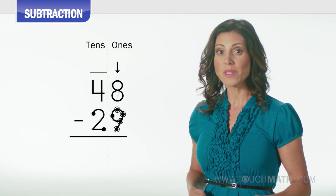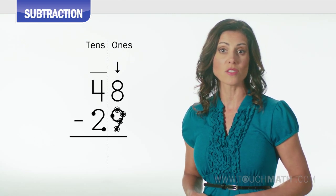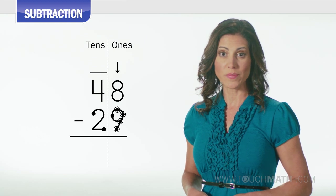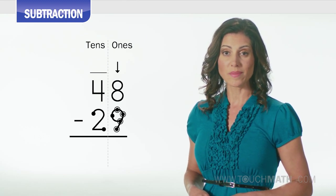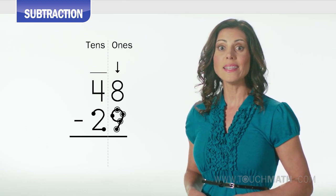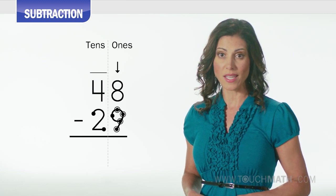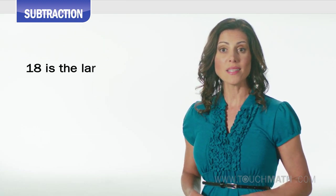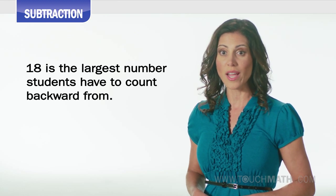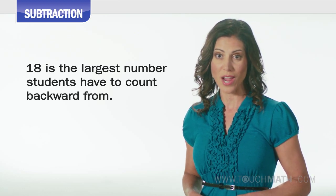But when the problem is changed to 48 minus 29, we have to regroup or borrow. The 4 becomes 3, 8 becomes 18, and 9 is subtracted from 18. In this way, 18 becomes the largest number from which your students are ever going to count backward for subtraction.